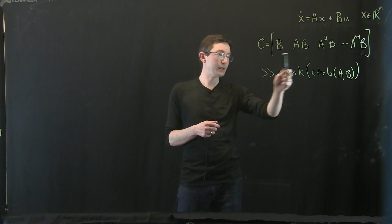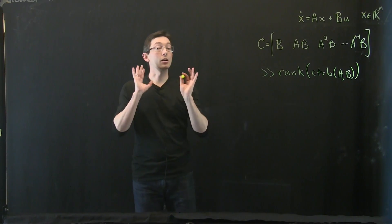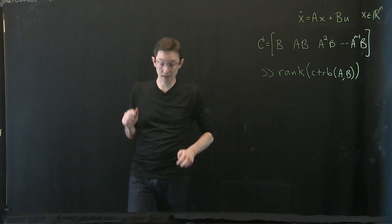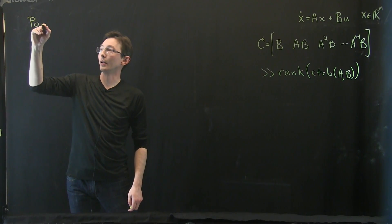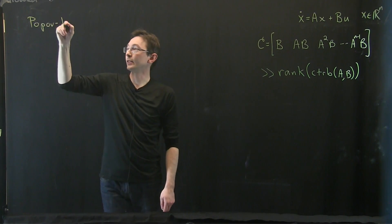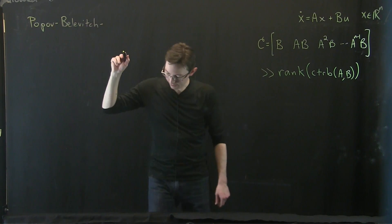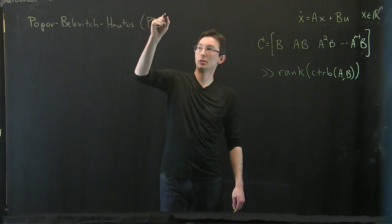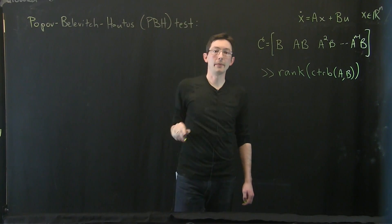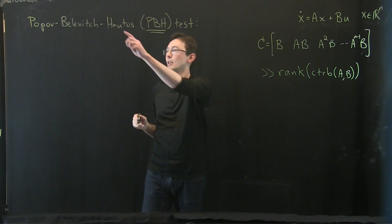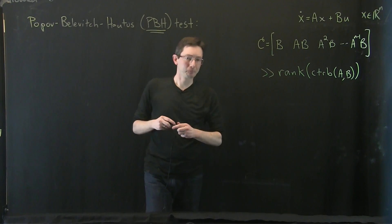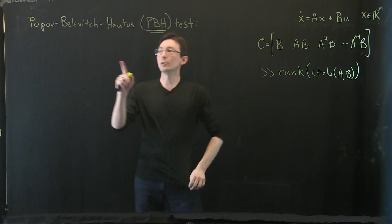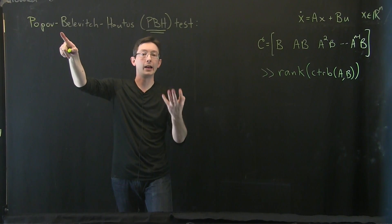We have this simple test in terms of the rank of the controllability matrix, but there are a number of other interesting tests for controllability. I'm going to tell you about one really interesting one called the Popov-Belovic-Hautas — the PBH test. The PBH test is an extremely simple test for controllability. It rivals the controllability matrix test in simplicity, but you also get a tremendous amount of insight into why and how a system is controllable.